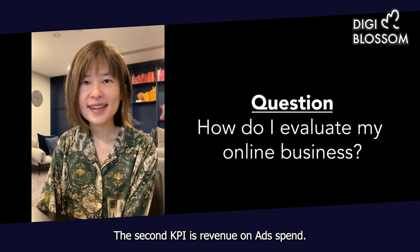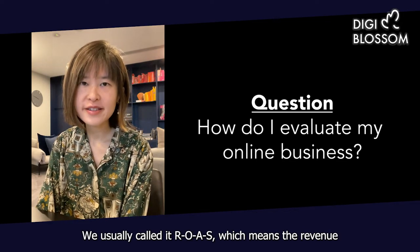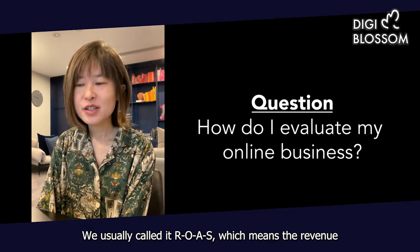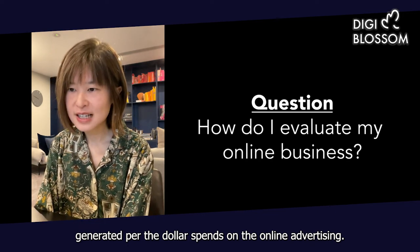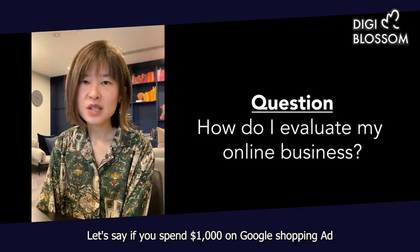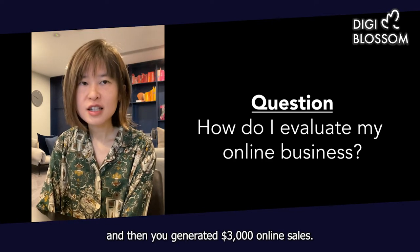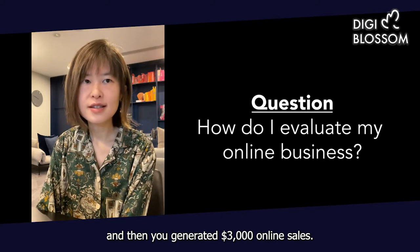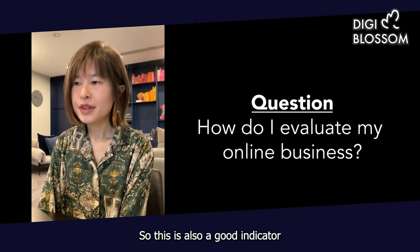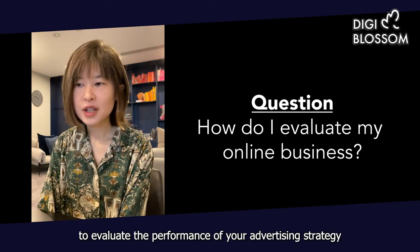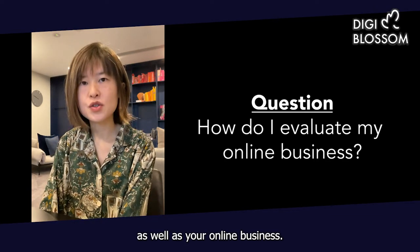The second KPI is revenue on ad spend, which we usually call ROAS. It means the revenue generated per dollar spent on online advertising. For example, if you spent $1,000 on a Google Shopping ad and generated $3,000 in online sales, then your ROAS would be three. This is a good indicator to evaluate the performance of your advertising strategy as well as your overall online business.